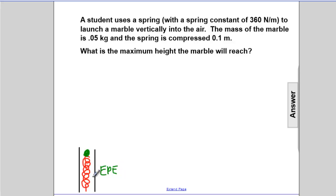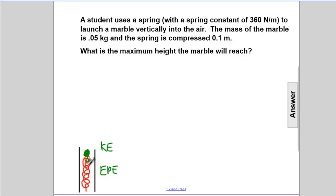Now when that spring is released, it's going to go boing and that projectile is going to launch upward. It's going to be moving upward, so it's going to have kinetic energy. The EPE stored in the spring after compression gets transformed into KE.